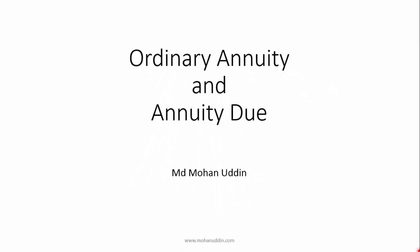In a previous lecture we have already discussed about annuity. Annuity has three characteristics: multiple cash flows, the cash flows are equal, and the cash flows are generated at fixed intervals of time. Annuities are of two types: one is the ordinary annuity and another one is annuity due. In this lecture we are going to discuss the difference between ordinary annuity and annuity due.